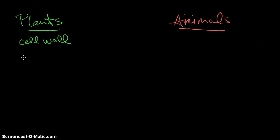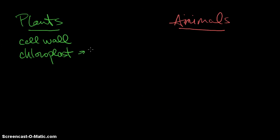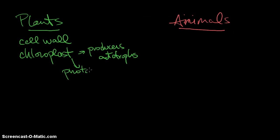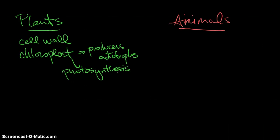And the other thing, another thing that they have that animals don't is called the chloroplast, and this is what really makes them producers or autotrophs because they make their own food through the process of photosynthesis, which we're going to talk about a little later, to make sugar, which then gets stored in a special way as cell walls or starch to be used later.